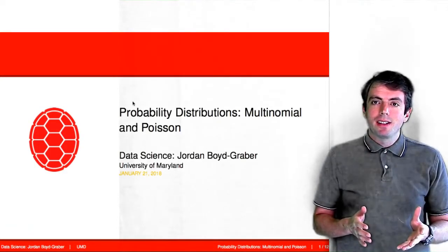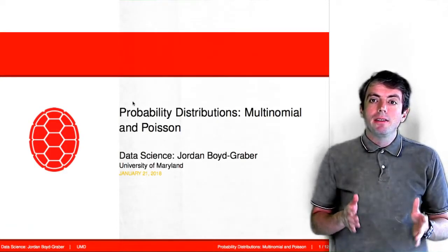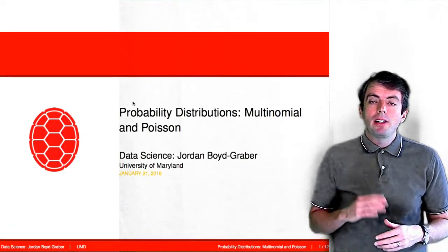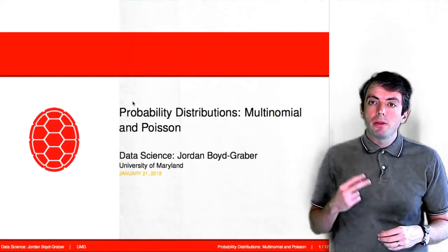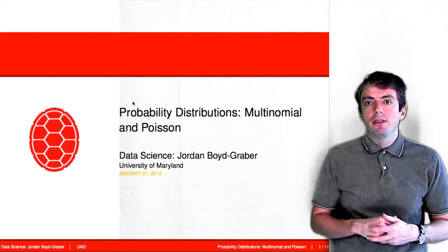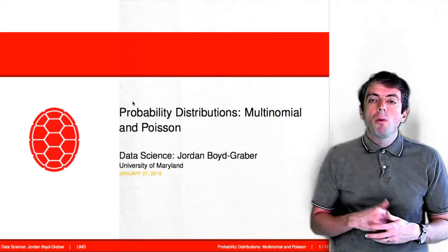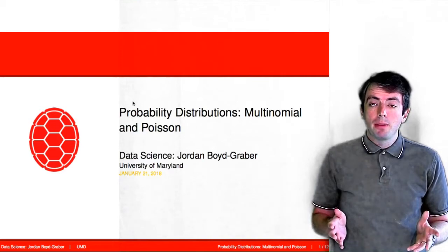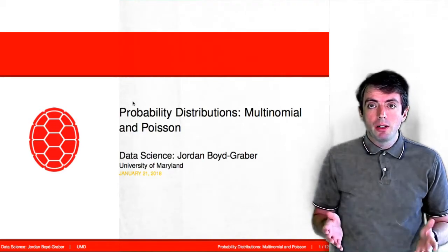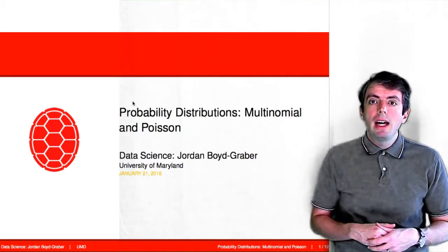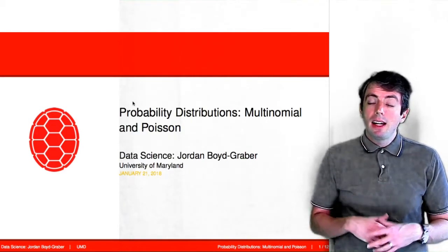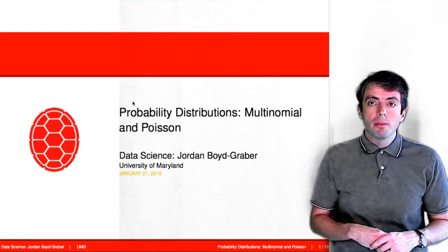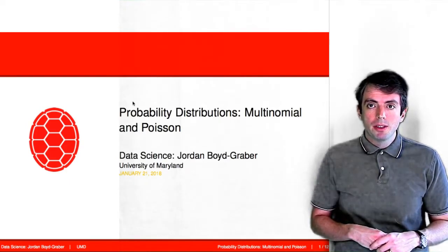Let's finish our discussion of discrete distributions by talking about two final distributions. One, a further extension of the distribution we've talked about thus far, the multinomial distribution. And the second, a rather different kind of discrete distribution, the Poisson distribution.